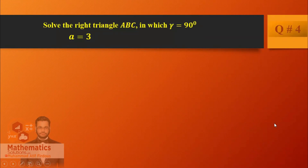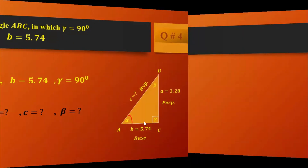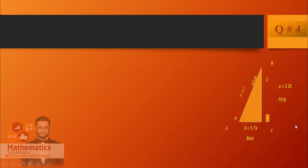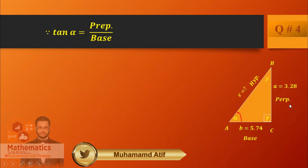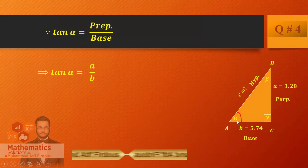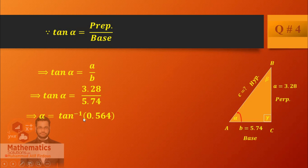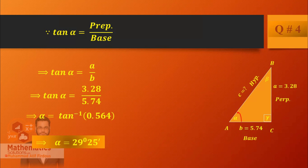Now I will find the two angles. Tangent alpha equals perpendicular over base. Tangent alpha equals 3.28 over 5.74. Take the tangent inverse of 3.28 divided by 5.74. Convert to degrees and minutes — your answer is alpha equals 29 degrees 25 minutes. Angle found.